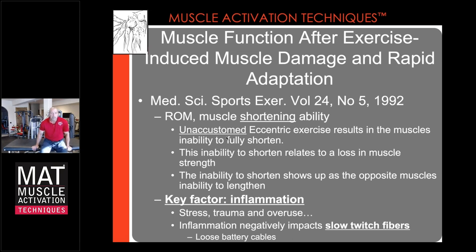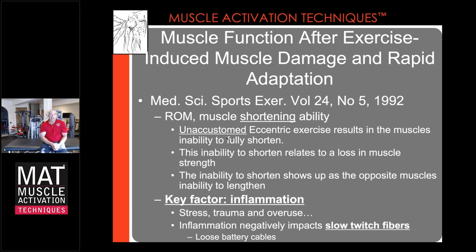There's research supporting this: unaccustomed eccentric exercise — every time our foot hits the ground we have muscles placed on a stretch, creating a transformation from eccentric to concentric contraction, so we're always under eccentric load when gravitational forces are transferred through the body. When the body is not prepared to tolerate eccentric exercise, it results in the inability for muscles to fully shorten, which means the opposite muscles have an inability to fully lengthen, so the opposite muscles show up as being tight. The resultant inflammation causes protective tightening by antagonist muscle groups.